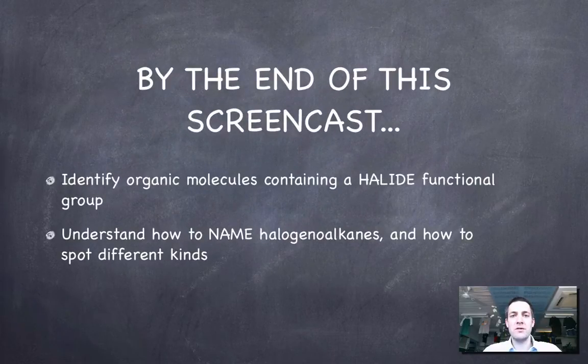So hopefully by the end of this film you'll know how to spot a molecule that contains a halide functional group and you will also know how to name halogenoalkanes and how to spot the different kinds. So just like there were different kinds of alcohols, we'll see that there are some different kinds of halogenoalkanes.